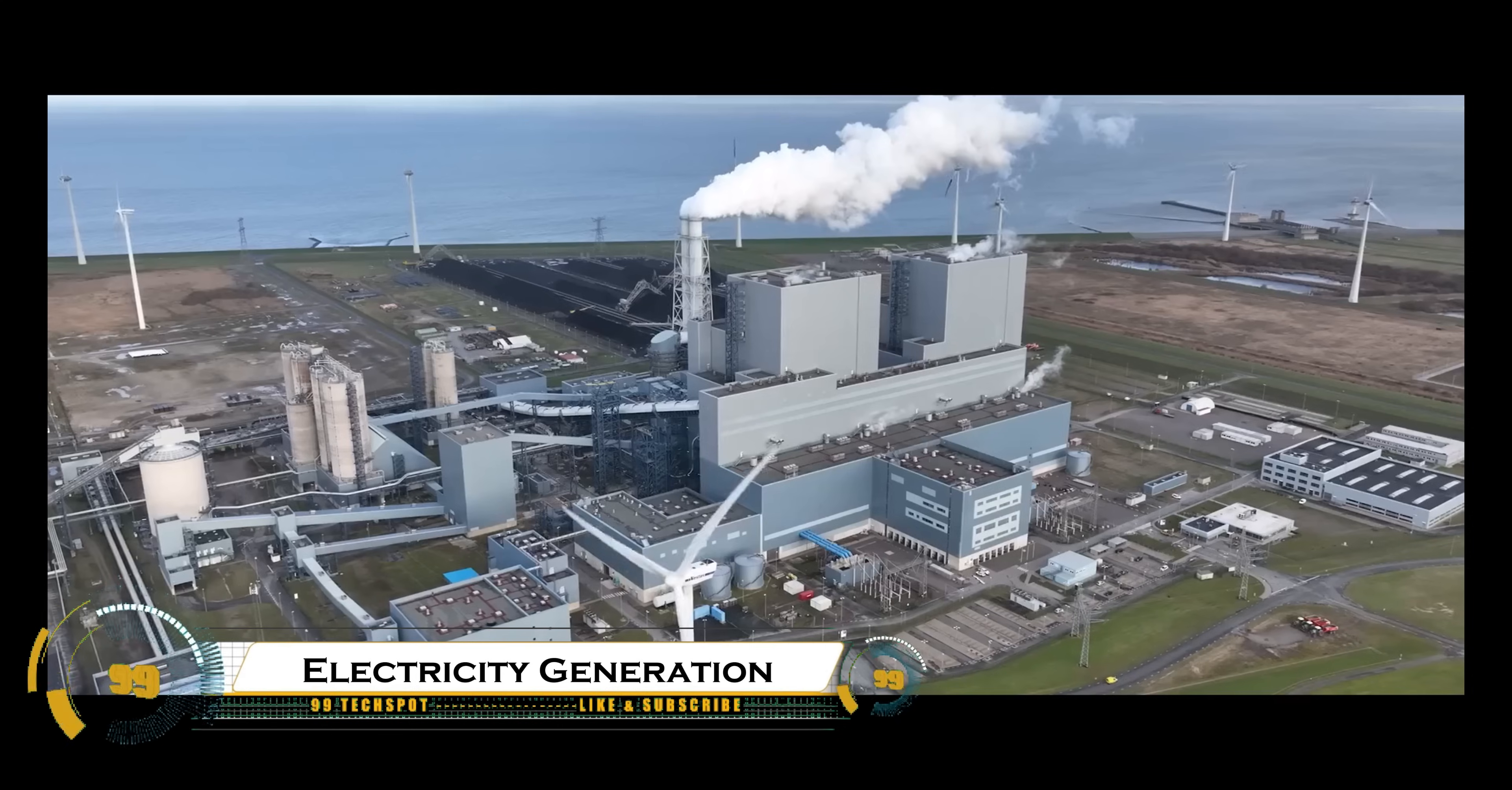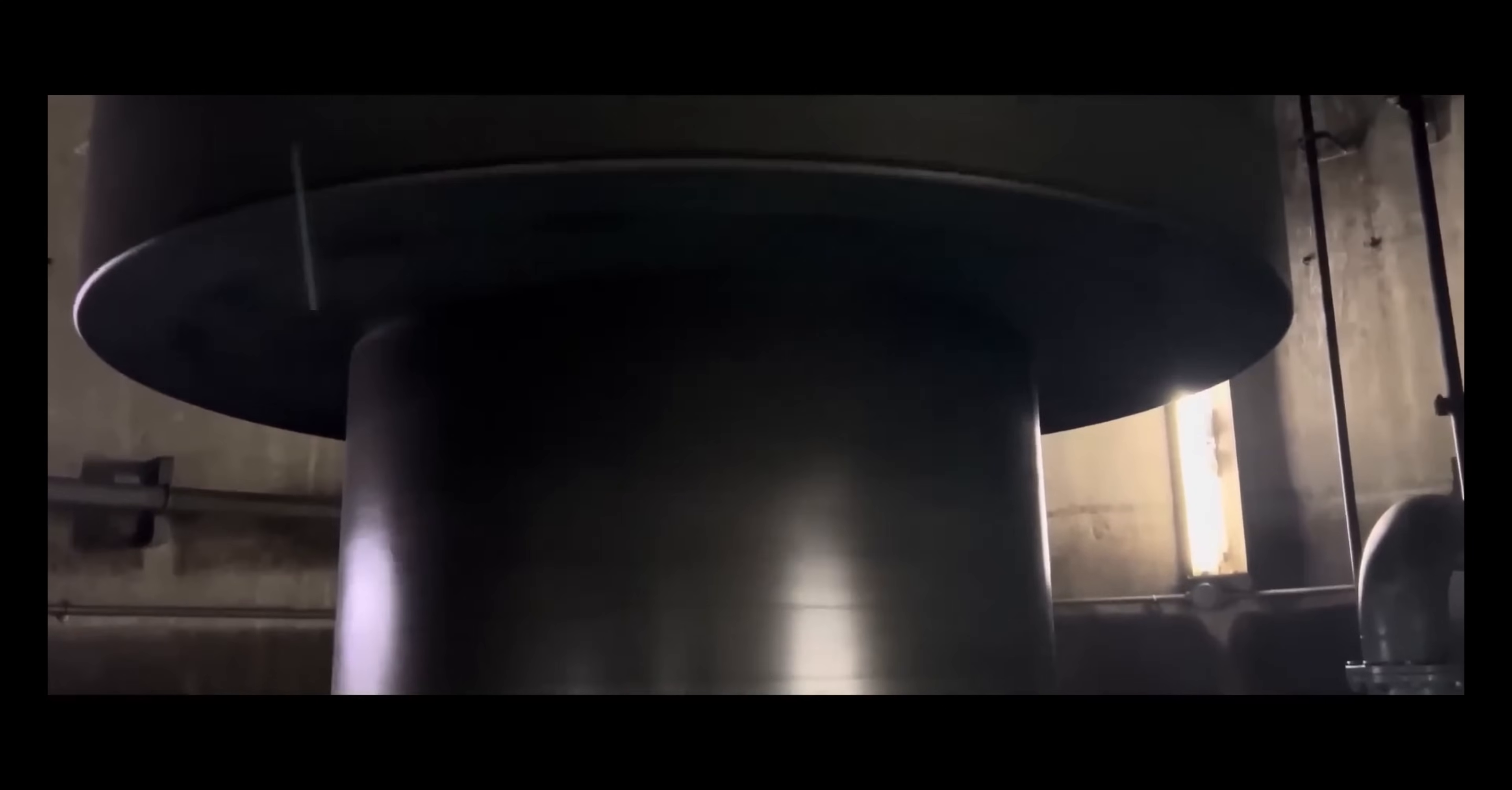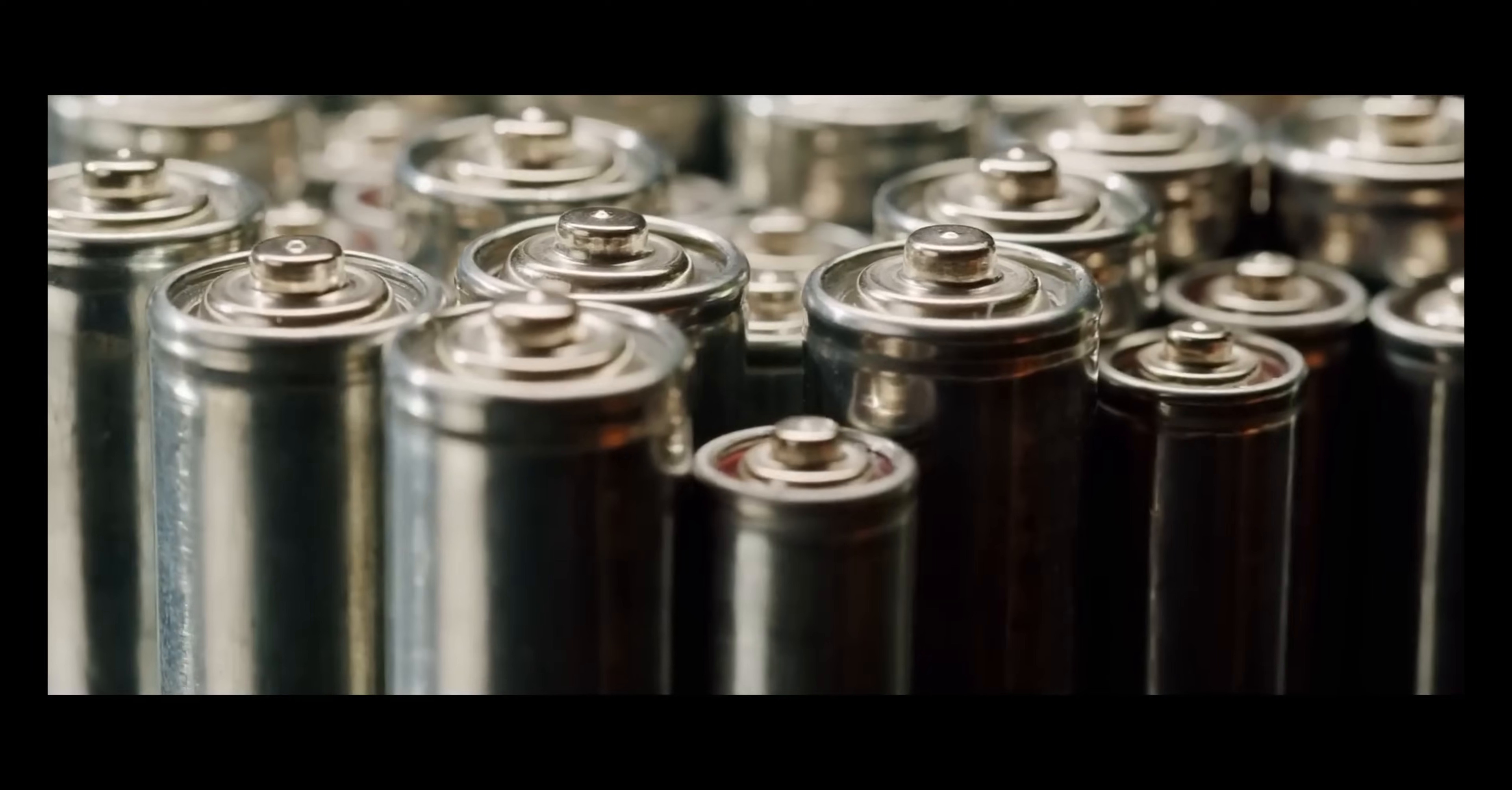Electricity generation and distribution form the backbone of modern civilization, powering homes, industries, and cities worldwide. Electricity is produced from various sources including fossil fuels, nuclear power, hydropower, wind, and solar energy. Once generated, it is transmitted through high-voltage power lines across vast distances before reaching substations, where transformers reduce the voltage for safe local distribution.